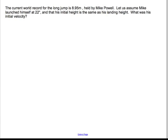And so I've selected a problem here where we look at Mike Powell, the current world record holder for the long jump. His long jump is 8.95 meters. And then I make an assumption that's probably not bad, but this is still my assumption that he launches himself at about 22 degrees from the horizontal as he's jumping.